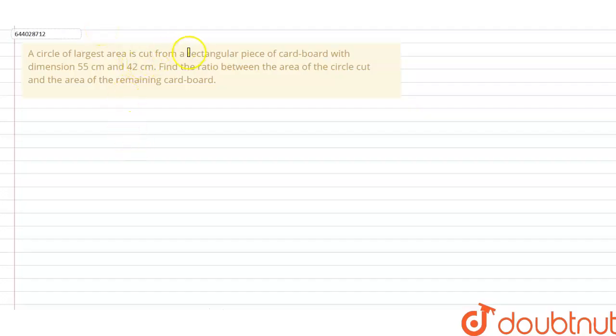The question is: A circle of largest area is cut from a rectangular piece of cardboard with dimensions 55 centimeter and 42 centimeter. Find the ratio between the area of circle cut and the area of remaining cardboard.